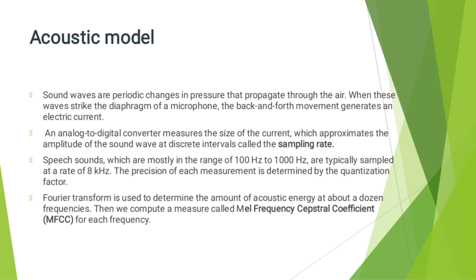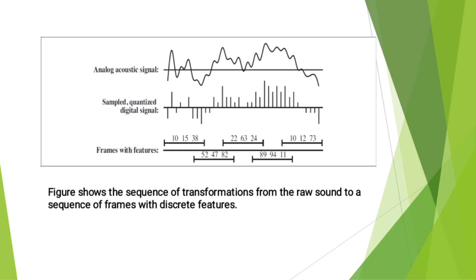Fourier transform is used to determine the amount of acoustic energy at about a dozen frequencies. We compute a measure called Mel Frequency Cepstral Coefficients (MFCC) for each frequency. This figure shows the sequence of transformations from the raw sound to a sequence of frames with discrete features. The first is the analog acoustic signal, the second is the sampled, quantized digital signal, and the next is the frame with features.